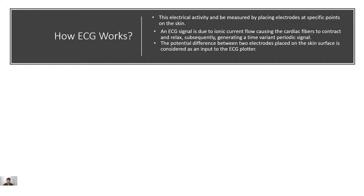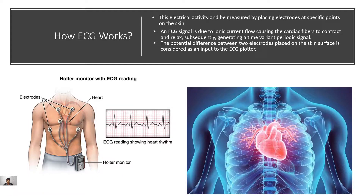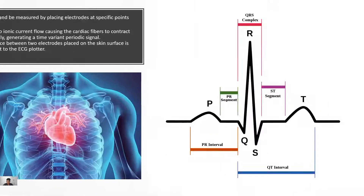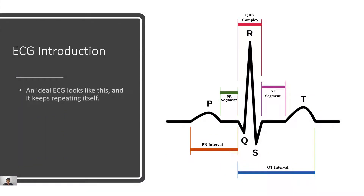How does ECG work? An ECG signal is due to ionic current flowing, causing the cardiac fiber to contract and relax, subsequently generating a time-variant periodic signal. The potential difference between two electrodes placed on the skin surface is considered as an input to the ECG plotter, as we can see in this picture. Some electrodes are placed on the body to detect the ECG signal.